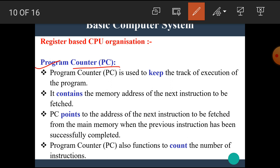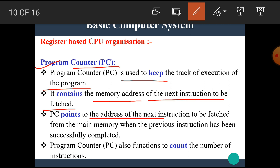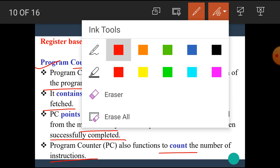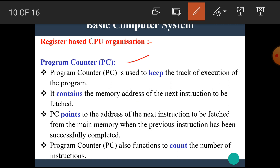The next register is the program counter or PC register. The PC is used to keep track of the execution of the program. It contains the memory address of the next instruction to be fetched. PC points to the address of the next instruction to be fetched from main memory when the previous instruction has been successfully completed. The PC also functions to count the number of instructions and keep a sequential track of execution.